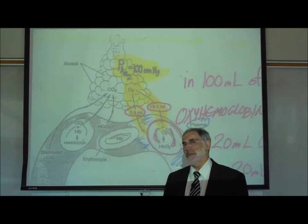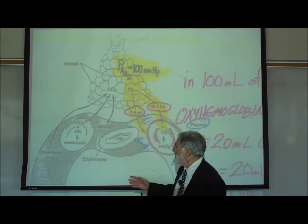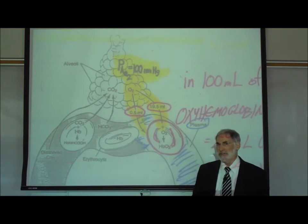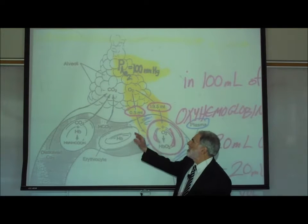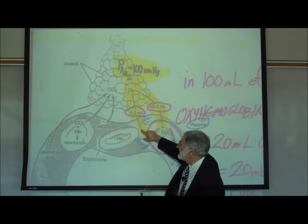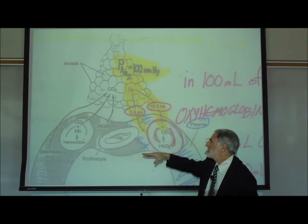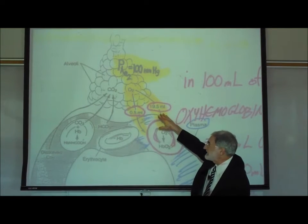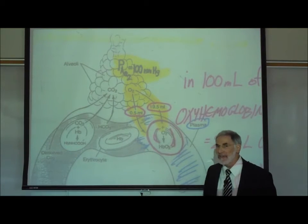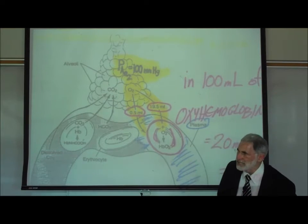If we measure the amount of oxygen in 100 milliliters of blood that has gone through the lungs, we would find that in 100 milliliters of blood there is about a half a milliliter of oxygen dissolved in the plasma. The majority of oxygen, 19.5 milliliters, is found inside the red blood cells.